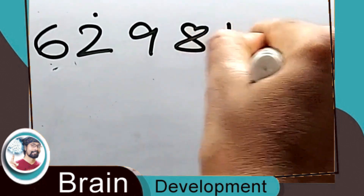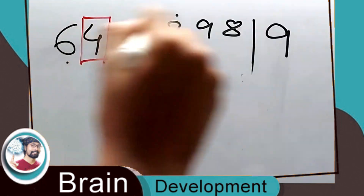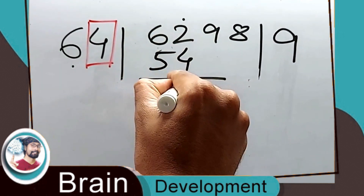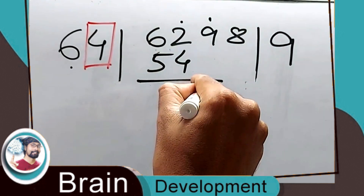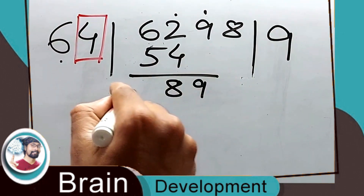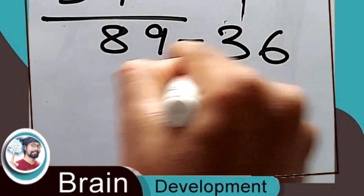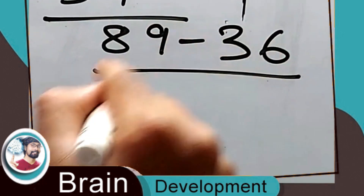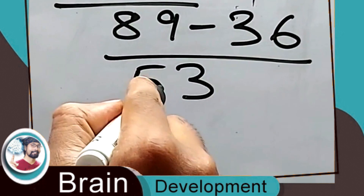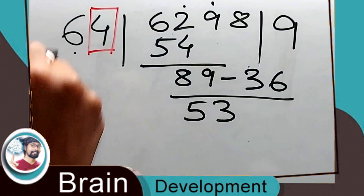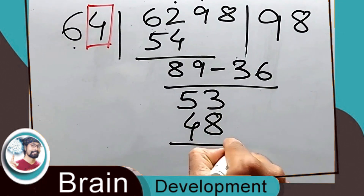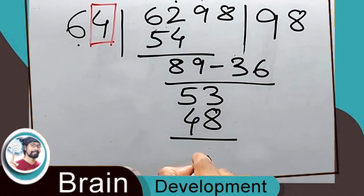Six nines are 54, so the remainder is 8. This 9 comes down. Now this 4 has to be multiplied by this 9 — four nines are 36. So the value is 53. Again divide 53 by 6 — six eights are 48 — so 53 minus 48 is 5.